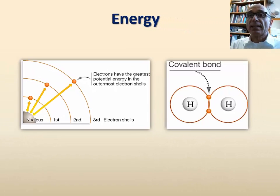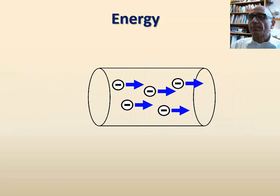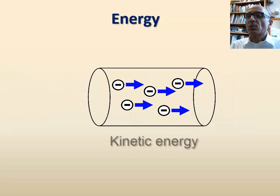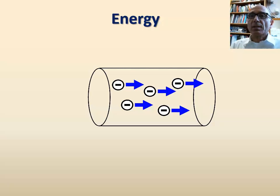The second type of energy is known as kinetic energy, which is energy in motion or energy in action. An example is the movement of electrons or charged particles in an electric or ionic current.